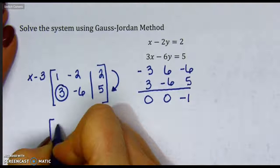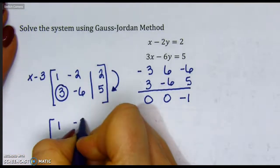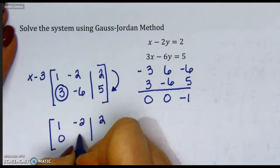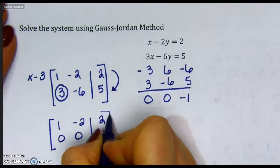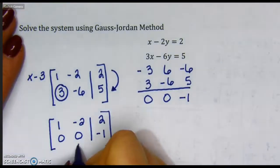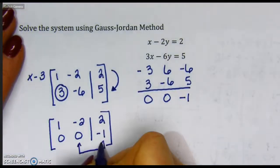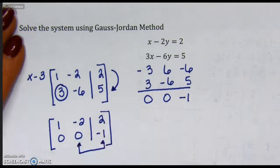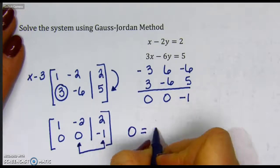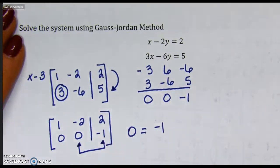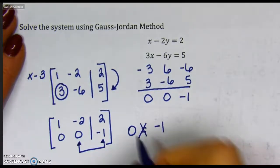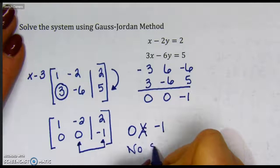Now I have 1, negative 2, 2, 0, 0, negative 1. Oh boy, we have a problem here. I have no value on the left to represent x or y, so right now I have a statement that says there's nothing on the left equals negative 1. We know that that is not a true statement, so this one has no solution.